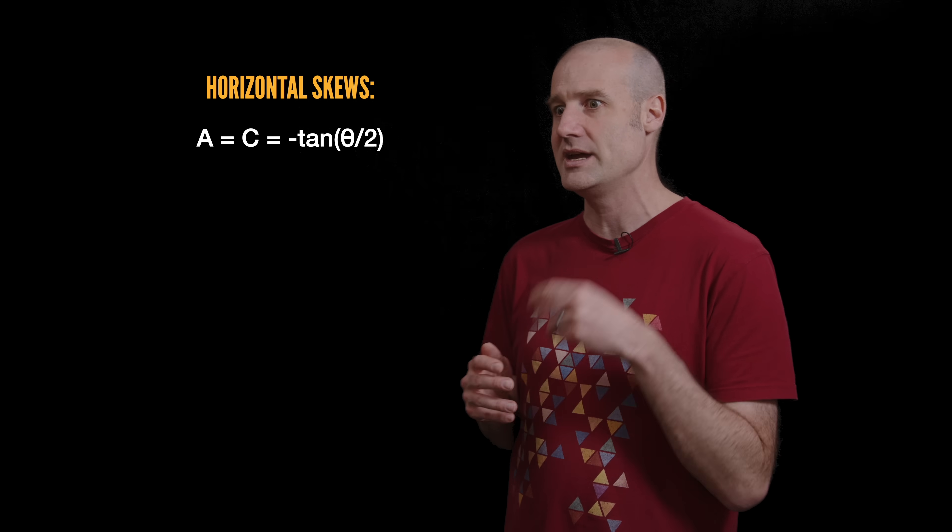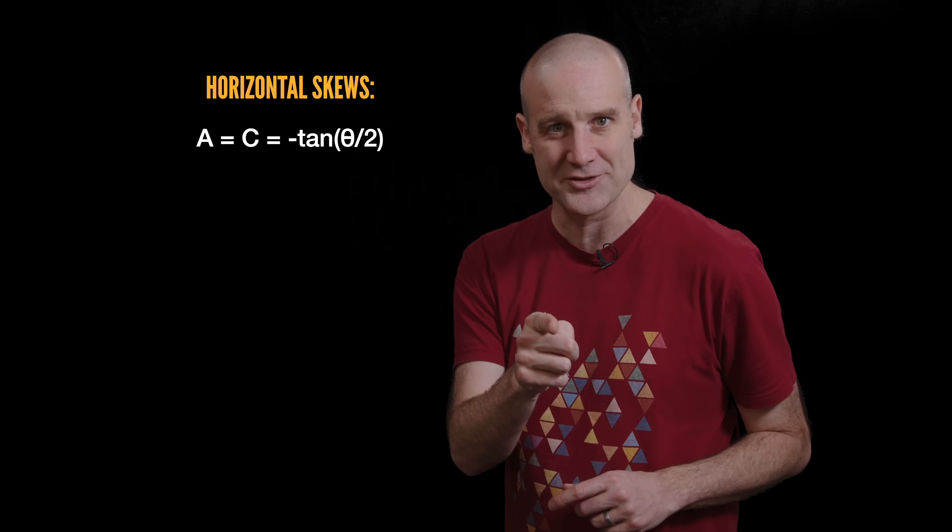the matrices are equivalent. On top of that you realize that the two horizontal skews are identical. A and C are the same amount of skew and they equal the tan of half the angle you want to rotate through.